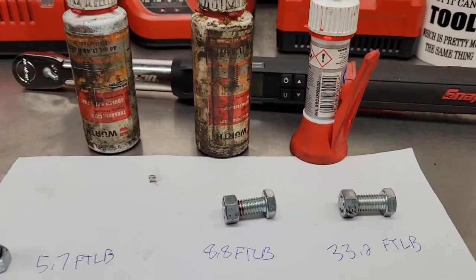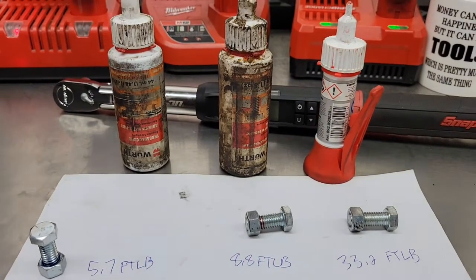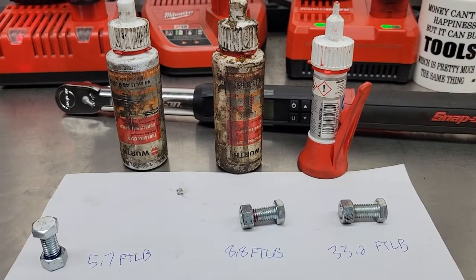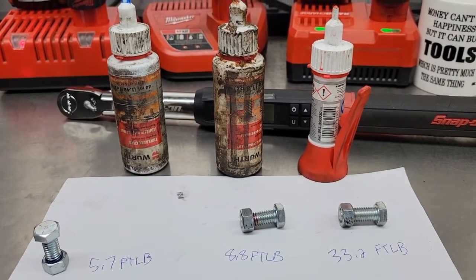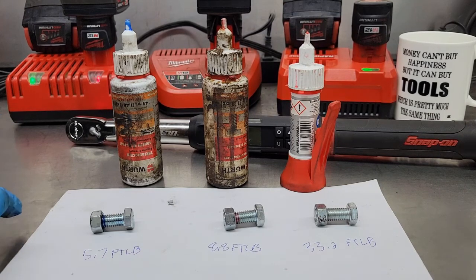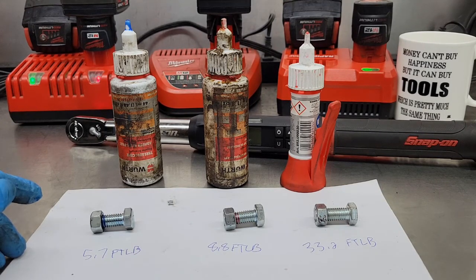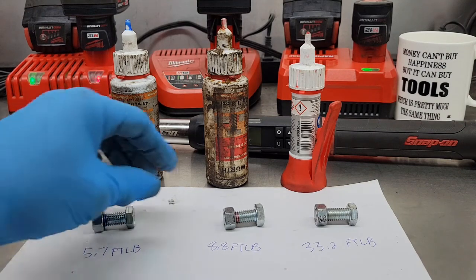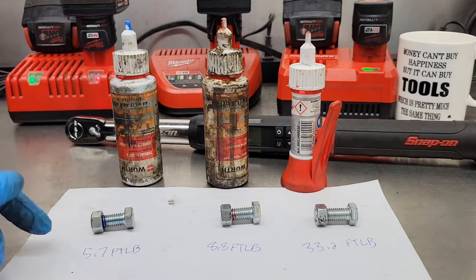I think going forward, instead of carrying thread locker around in my little mobile case, I'm just going to throw a thing of super glue in there instead. Probably be a lot cheaper. Now this is the first time I did this experiment, so seeing these numbers, it's my first reaction as well as yours. Now I can understand the difference between the blue and the red thread locker, the jumping torque, just regular and extra strength.